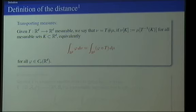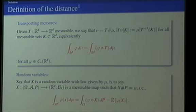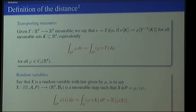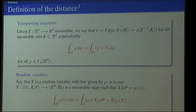For defining the Wasserstein distance between two probability measures, first I need a notation for how to transport one measure through a map. I'm given a measurable map T. I will say that μ̃ is the transported measure of μ through T if, essentially, the measure of any Borel set with respect to μ̃ is obtained by measuring the preimage set through T. It's much easier to remember this via the definition on test functions: the action on φ is obtained by the action of μ on φ composed with T.